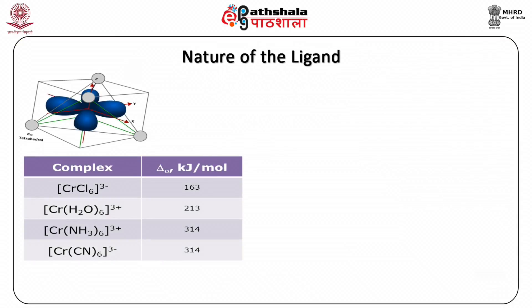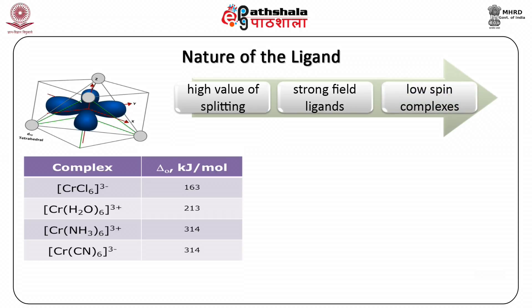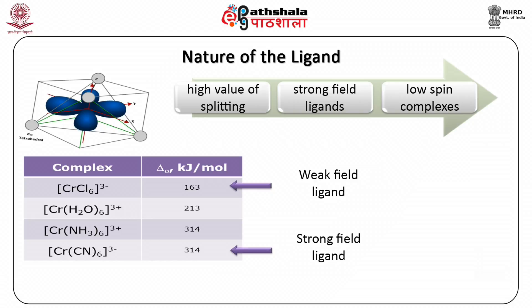The magnitude of crystal field splitting greatly depends upon the nature of the ligand. If it is easier for a ligand to approach the metal ion and interact with it, then the value of the splitting will definitely be high. Ligands causing high splitting are called strong field ligands, and the complexes formed by them are termed low spin complexes since they initiate spin pairing in the T2G level. Ligands for which the splitting value is low are called weak field ligands. The ligands are arranged in a spectrochemical series according to their ligand field strength.